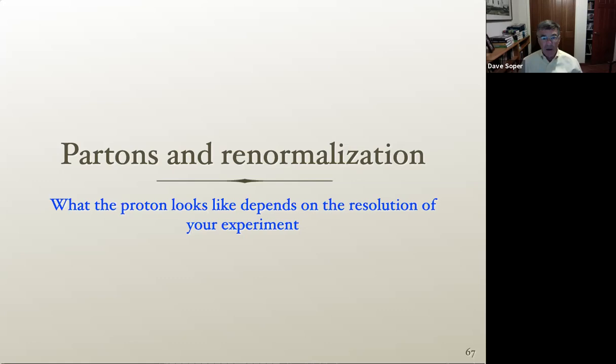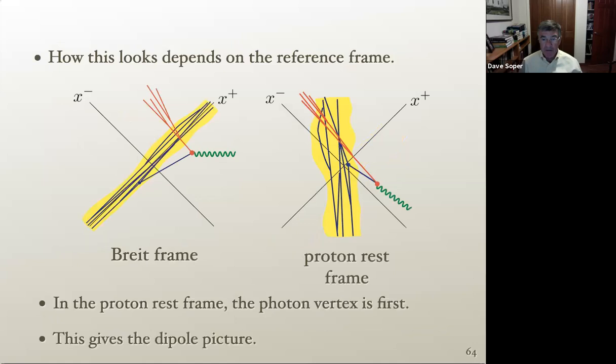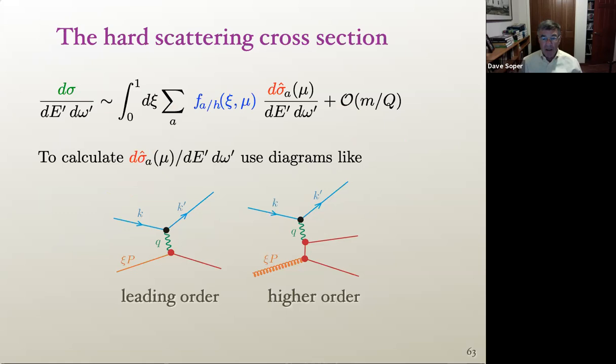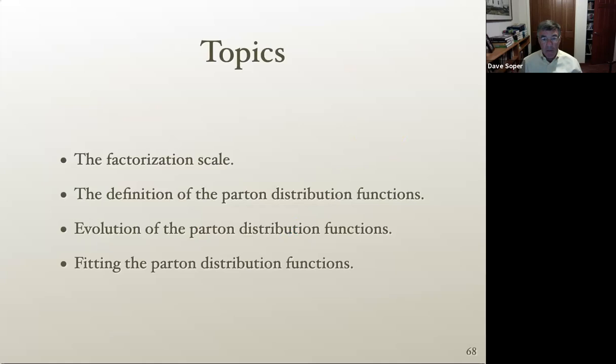What I want to do is talk about partons and renormalization. We had previously talked about deeply inelastic scattering, and there's a formula for the hard scattering cross-section in terms of parton distribution functions. What I want to talk about now is what's called the factorization scale — that's a different scale that gets into your problem — and how parton distribution functions are defined, their evolution (they depend on this factorization scale), and fitting those to data.